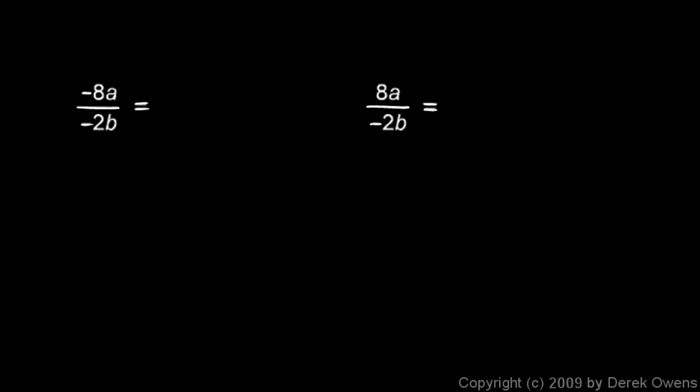Or, I don't really know if it's positive or not because I don't have values for those variables a and b. But, I can think of this negative sign and that negative sign as canceling each other out. And, one way to cancel them out is to just change them into plus signs by putting a little mark there. And, then I just end up with 8a over 2b.